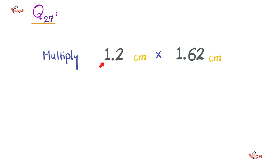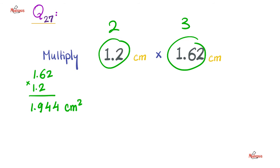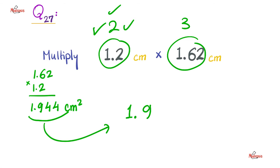Try this one next: 1.2 centimeters times 1.62 centimeters. Here is what I got: 1.944 cm². Am I done yet? No. In 1.2, I have two significant figures, and in 1.62, we have three significant figures. What's the least number I can get away with? Two. So I need to round 1.944 to two significant figures. It becomes 1.9 centimeters squared.